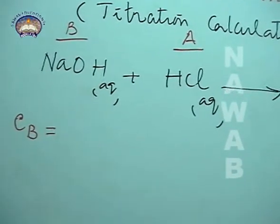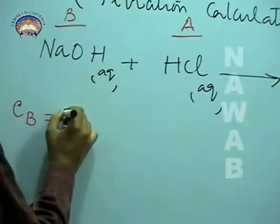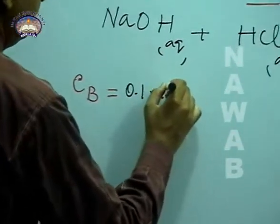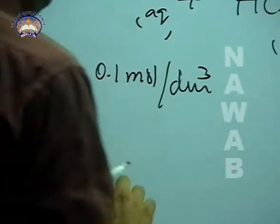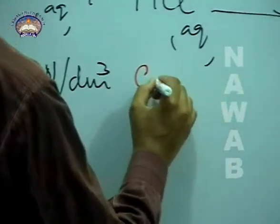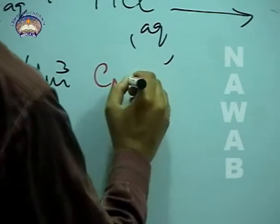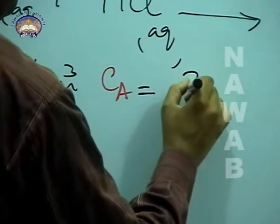Concentration of base, suppose that is given 0.1 mol per decimetre cube. This is given, and concentration of acid we want to know. We have to find this.